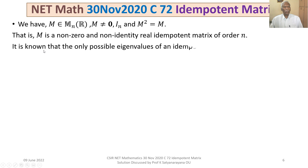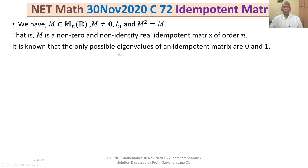It is known that the only possible eigenvalues of an idempotent matrix are 0 and 1. This is a very standard result that we all know.